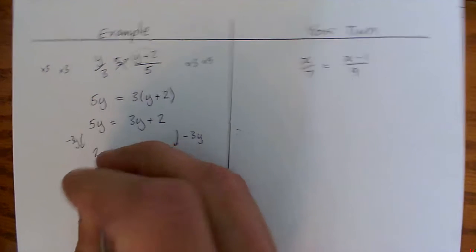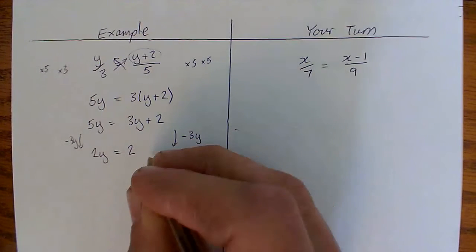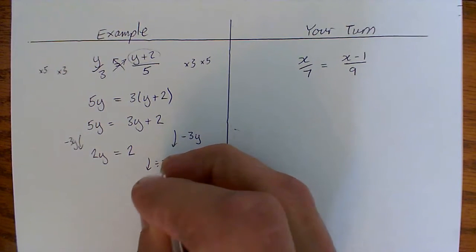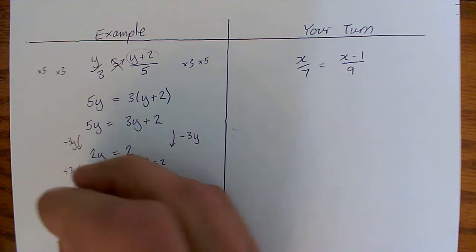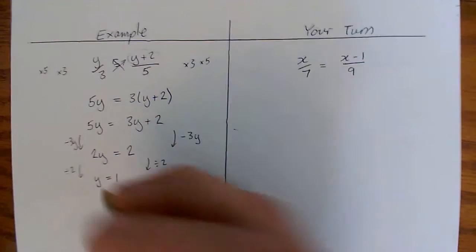So we end up with 2y equals 6. And then we can divide both sides by 2. So we end up with y equals 1.